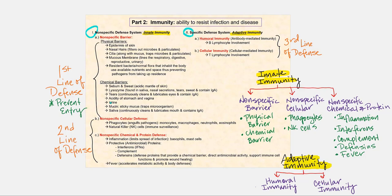These are divided into our lines of defense: first line, second line, and third line of defense. Let's first look at our first line of defense. Their purpose is to prevent entry of the microbe or pathogen. For non-specific physical barriers, the ultimate will be our skin — the epidermis of our skin.